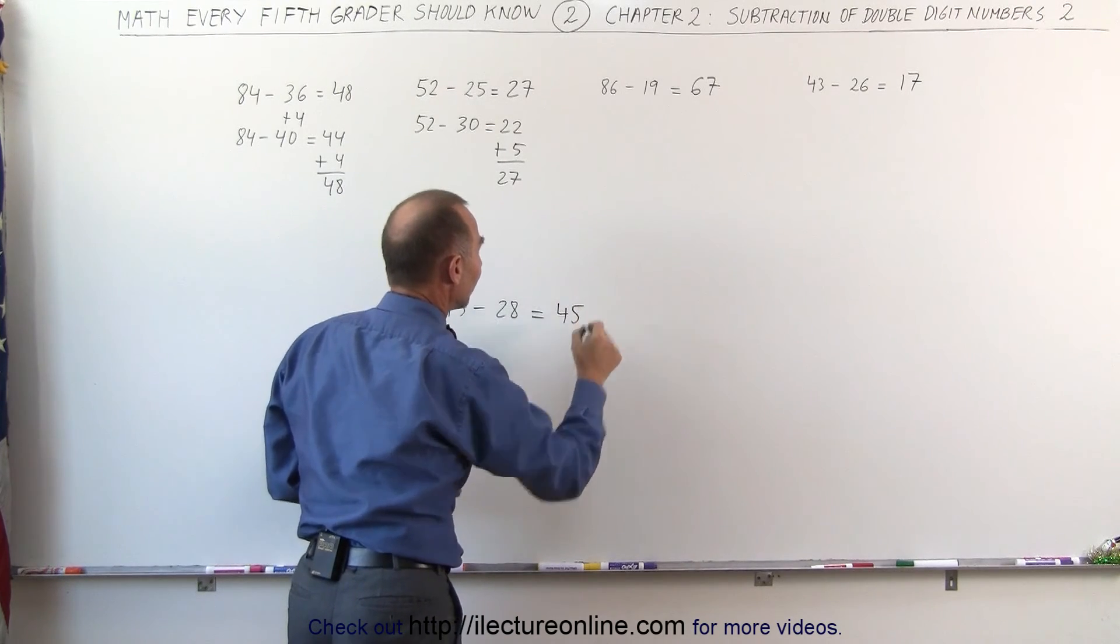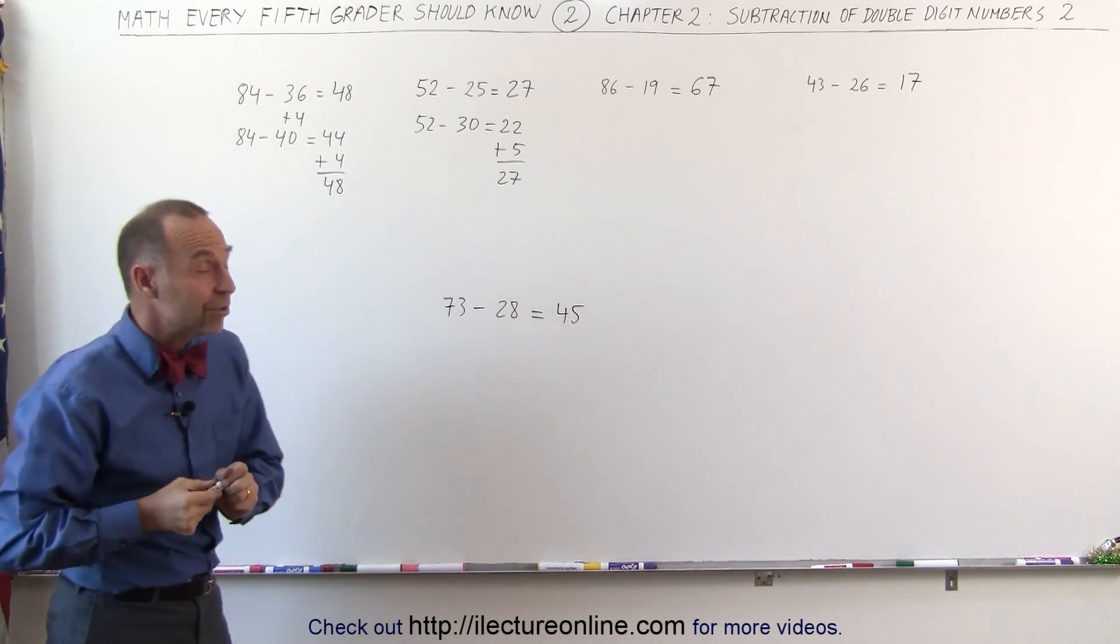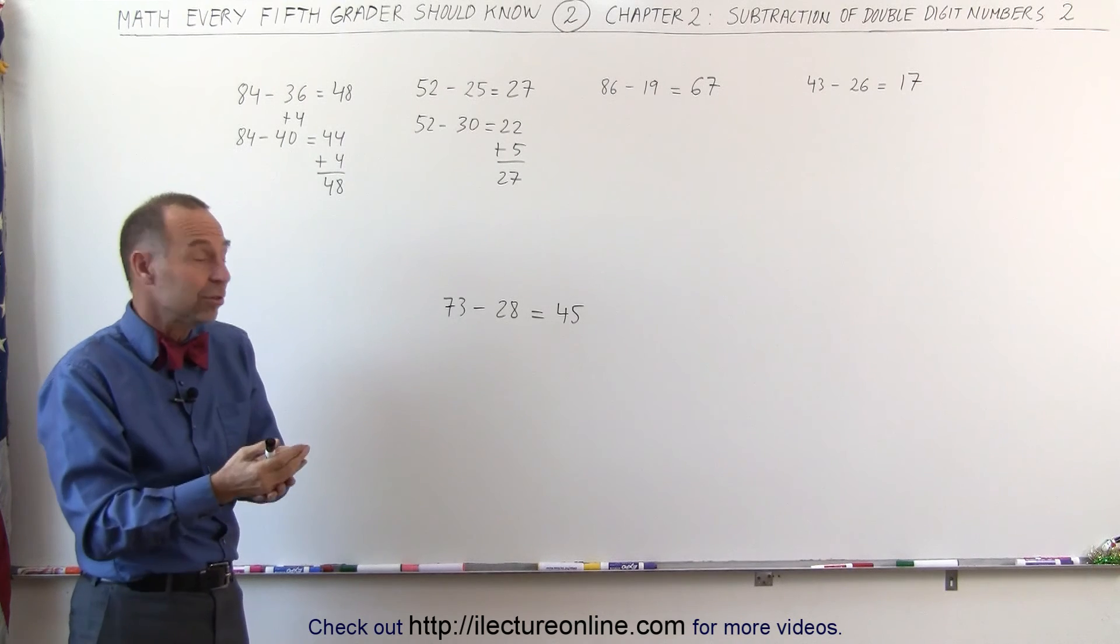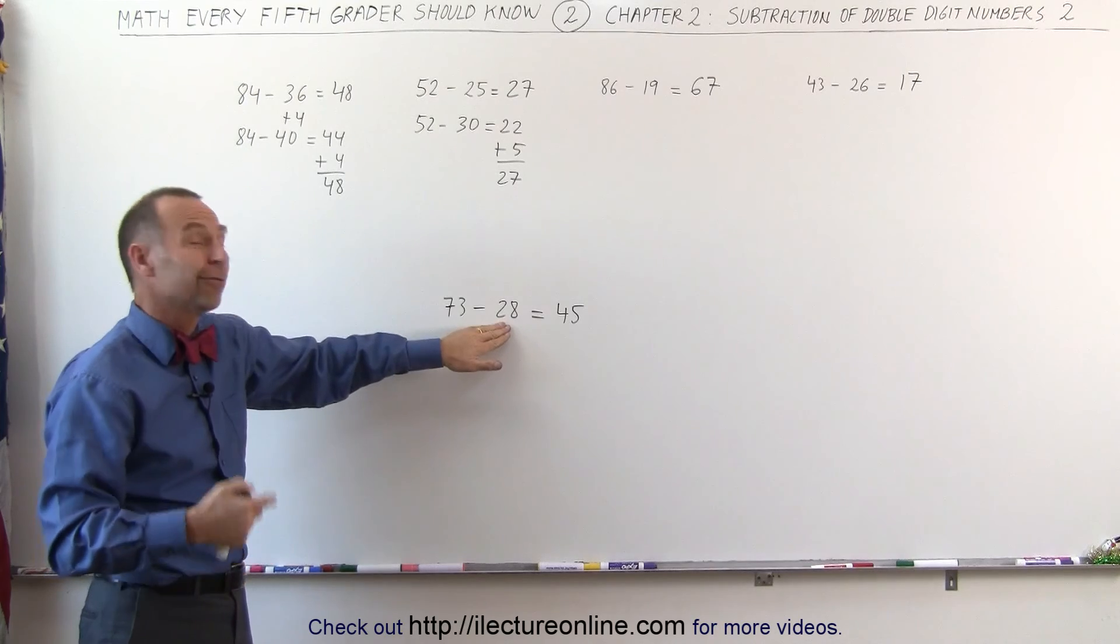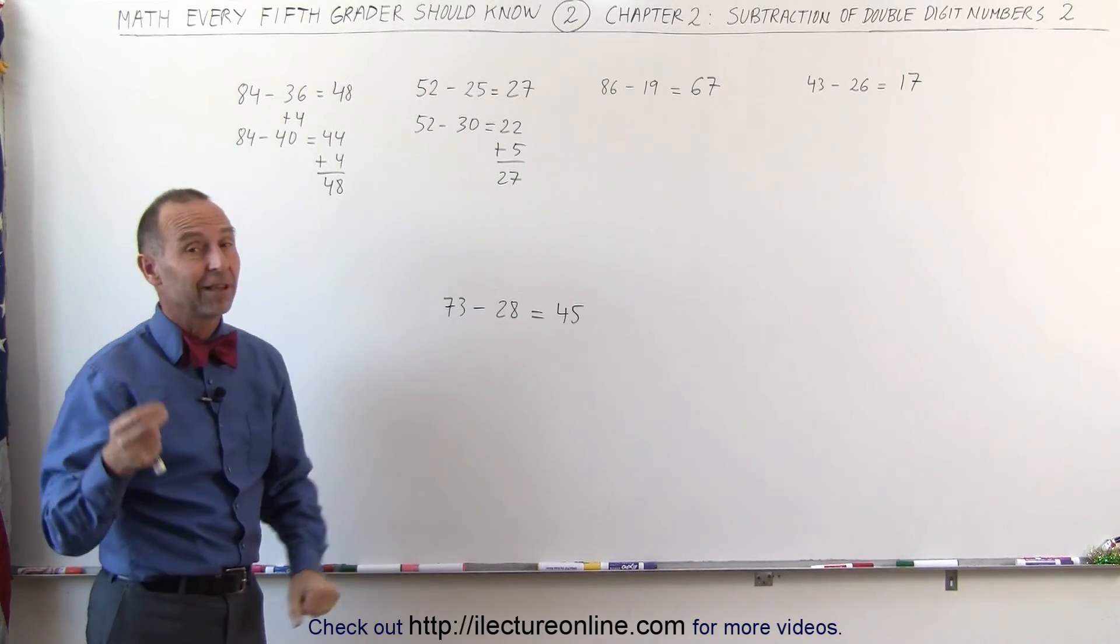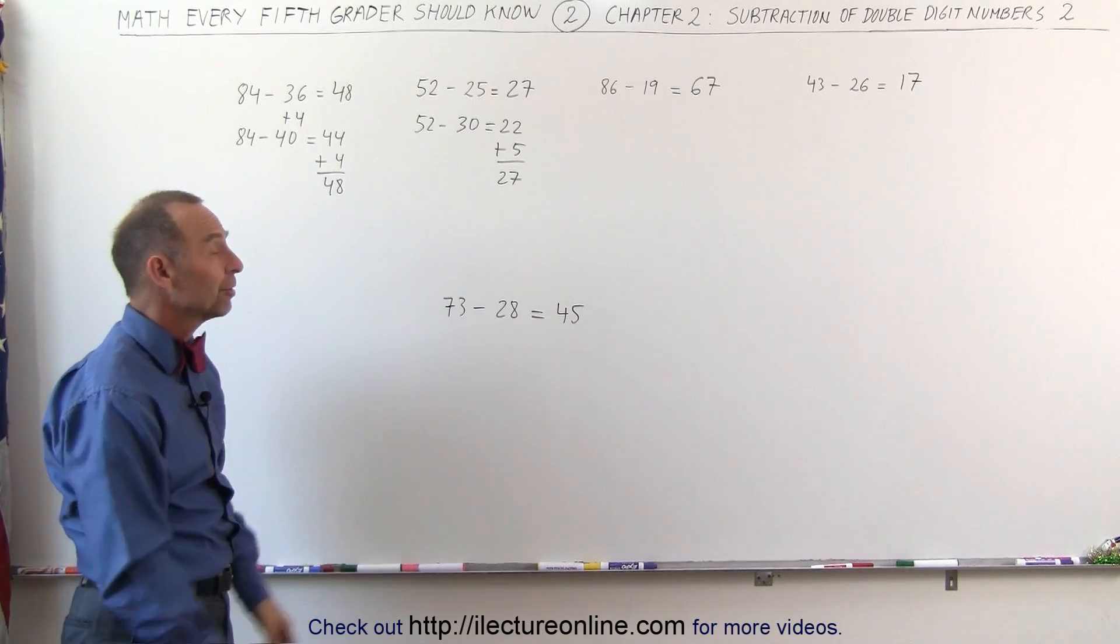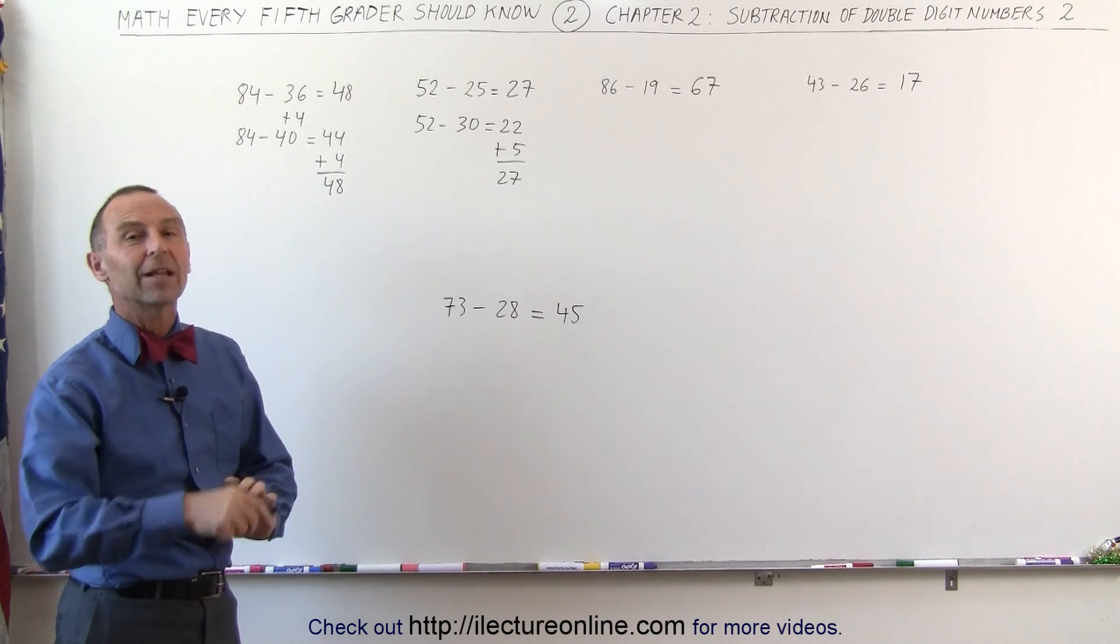You can very quickly in your head come up with a subtraction. All you have to do is add a couple more to that. So 73 minus 30, 43 plus 2, 45. And so very quickly you can come up with double digit subtractions without having to write anything down.